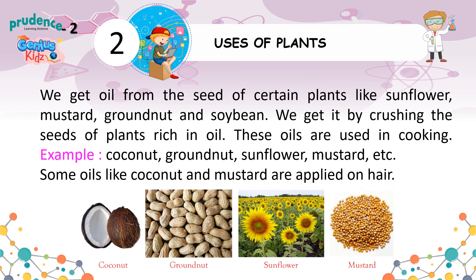We get oil from the seeds of certain plants like sunflower, mustard, groundnut, and soybean. We get it by crushing the seeds of plants rich in oil. These oils are used in cooking — examples include coconut, groundnut, sunflower, mustard, etc. Some oils like coconut and mustard are also applied on the body.